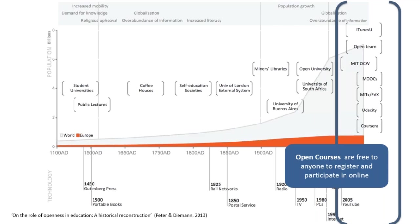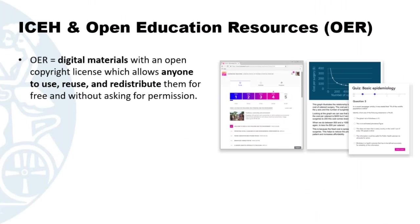LSHTM has been part of this movement, running five or six open courses on FutureLearn with about 80,000 learners. Another important aspect is open educational resources — the course materials used in open courses and elsewhere. They are defined by having an open copyright license, meaning anyone can download, use, change, and share them for free without asking the original publisher for permission.